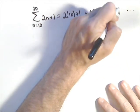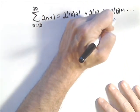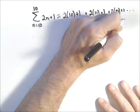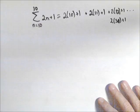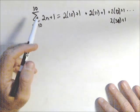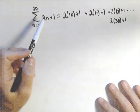All the way up to 2 times 30 plus 1. But it takes a little bit of work to do all those terms, so sometimes if we can, we'd like to apply some of our formulas.